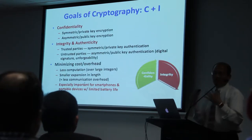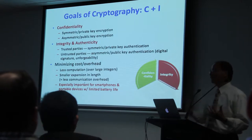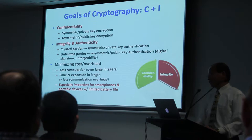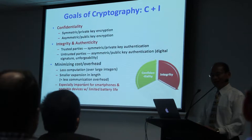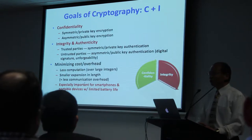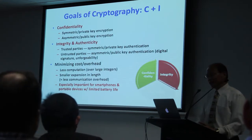Most people doing crypto research focus on the top half — how to design these techniques, using mathematical or physical tools, to achieve confidentiality or integrity or both. From my point of view, that's not enough. The bottom half is often more important. The cost overhead for any solution you have overrides everything else, because it determines whether the idea you technically developed will eventually be used by other people. The cost overhead is so important.